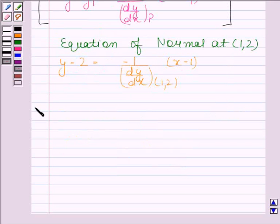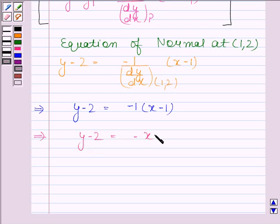This implies y minus 2 is equal to minus 1 times (x minus 1). This implies y minus 2 is equal to minus x plus 1.